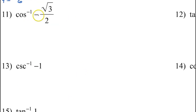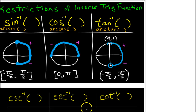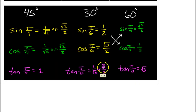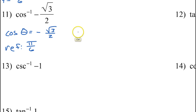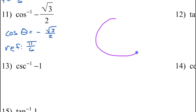Number 11: inverse cosine of negative radical 3 over 2. You should be thinking the cosine of what angle is equal to negative radical 3 over 2. Start with the reference angle — ignore the negative sign. The cosine of what angle is radical 3 over 2? That is pi over 6. Please make sure that you have memorized all of these nine values. The cosine of pi over 6 is radical 3 over 2, so that's the reference angle, not the final answer. Knowing the reference angle is pi over 6 allows us to draw a diagram of pi over 6s.